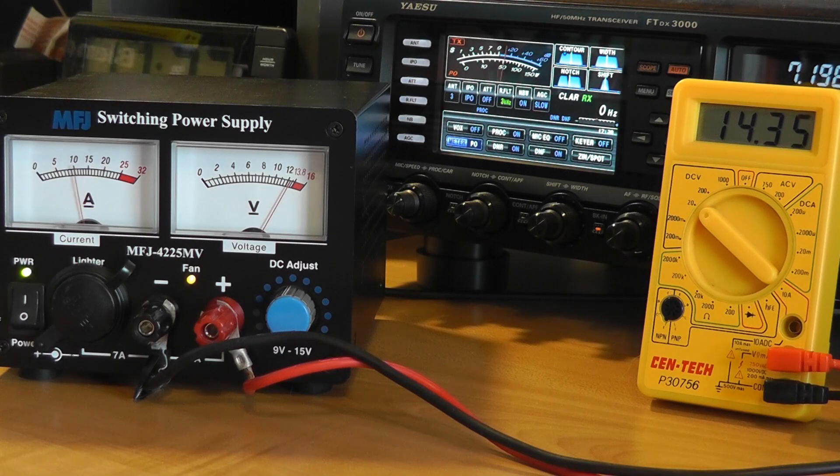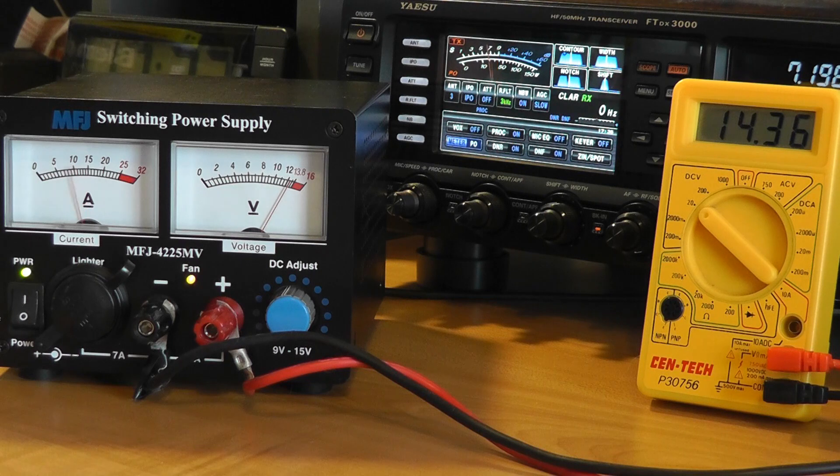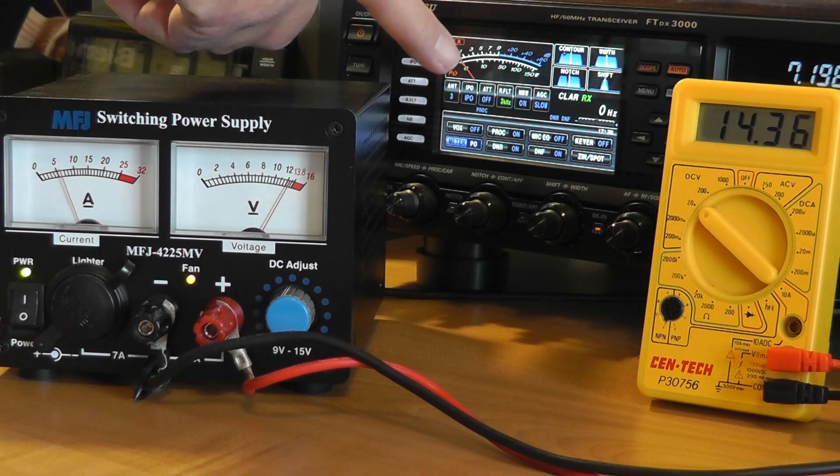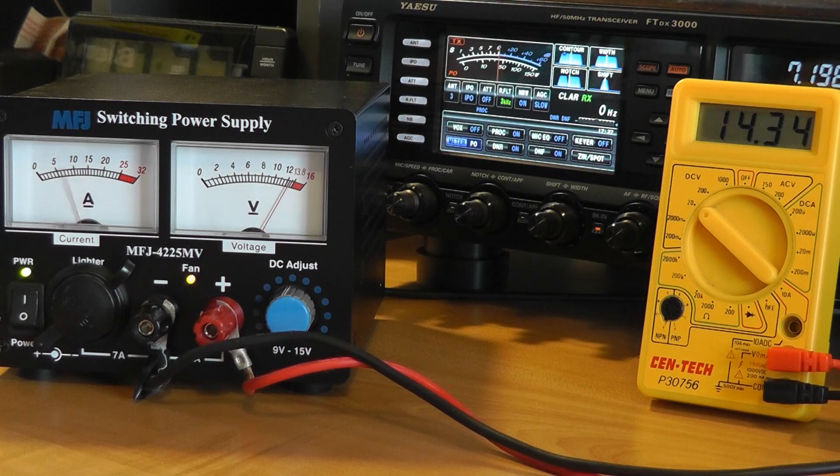Let's look at a real situation. Here, I've connected this MFJ 4225MV power supply to my Yaesu FTDX3000. Note that you should always turn on the power supply before turning on the radio. I'm transmitting into a dummy load using single sideband. Note that when I don't talk, the current is quite low, just enough to operate the various processor circuits.